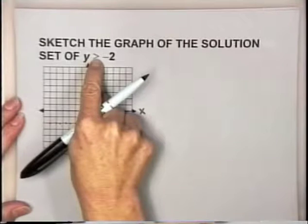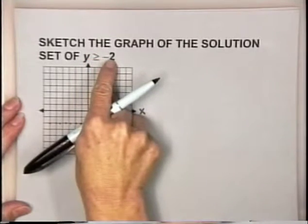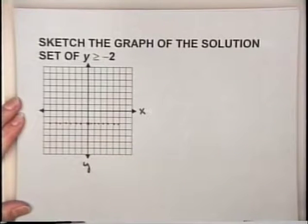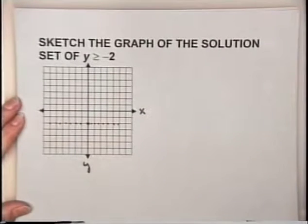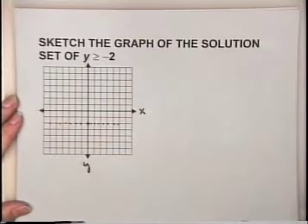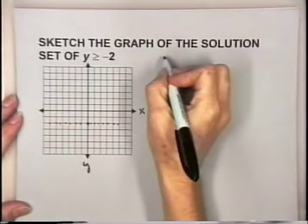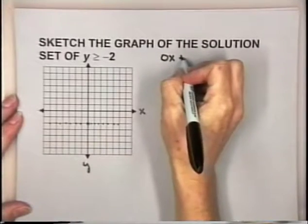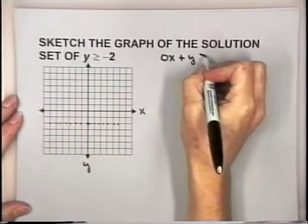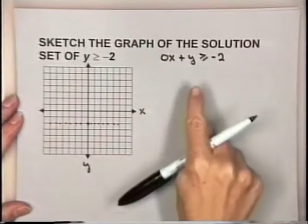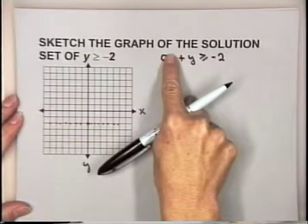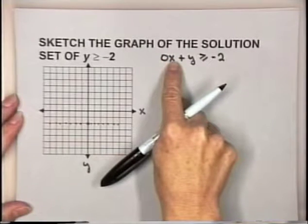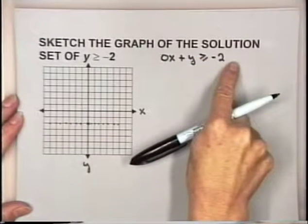Part of our solutions are y-values greater than negative 2. Those would be the y-values up here, because negative 1, 0, 1, 2, 3 are all larger than negative 2. Notice we haven't said anything about x-values — x is not in this inequality. We could write it as 0x plus y greater than or equal negative 2, showing that the value of x is not important because 0 times any number is 0. Regardless of the value of x, all we care about is that y be greater than or equal to negative 2.